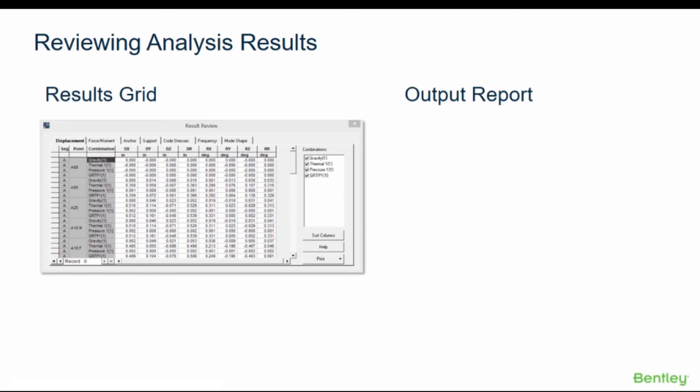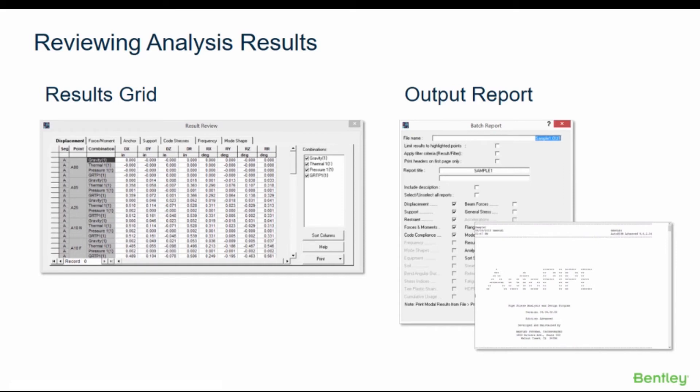If a modal analysis had been run, you can also review the frequency and mode shape results. The batch report dialog allows you to choose report options and sub-reports to view in the output report, similar to the model input listing. Once accepted, an ASC2 text report is created for you to review all of the results sub-reports that have been selected.